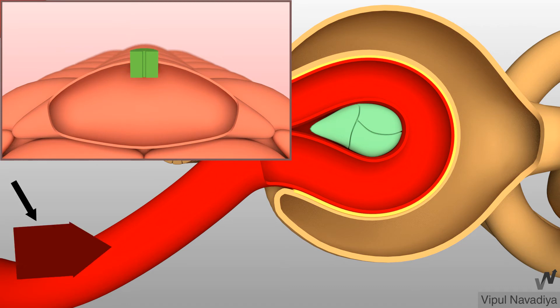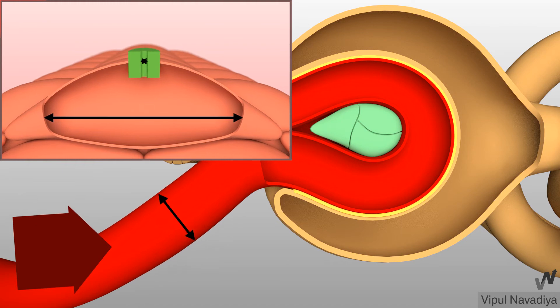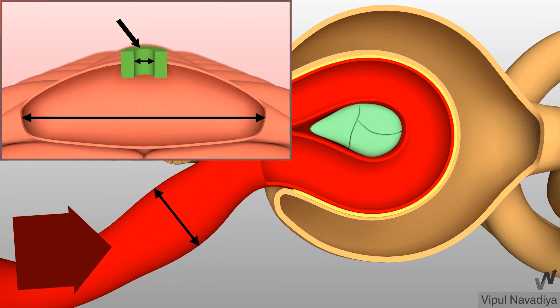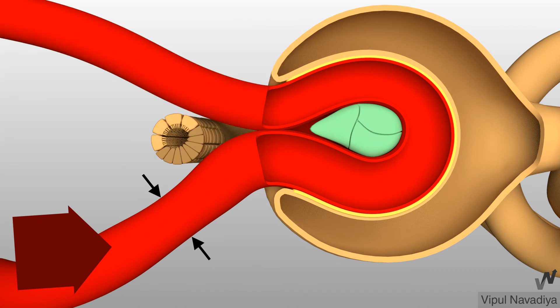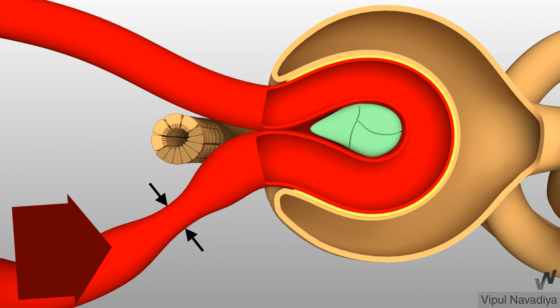When blood pressure rises, muscle cells get stretched which opens these channels. This leads to cation influx and depolarization leading to contraction of the cell. So afferent arteriolar resistance increases. The more the systemic pressure rises, the more the arterial constricts.